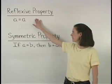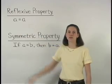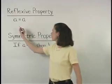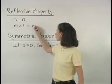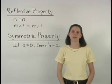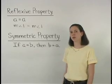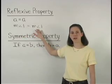The reflexive property states that A equals A. For example, the measure of angle 1 equals the measure of angle 1 based on the reflexive property. So the reflexive property simply states that something is equal to itself.